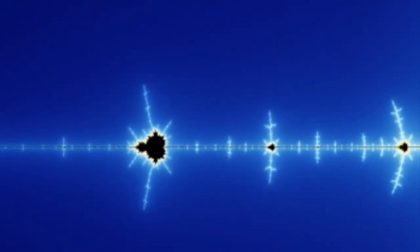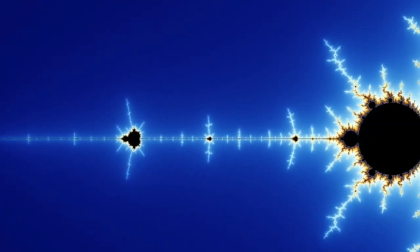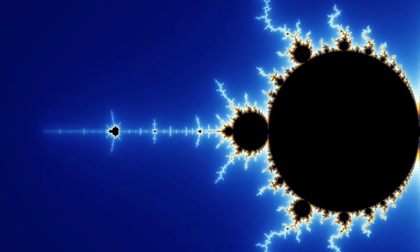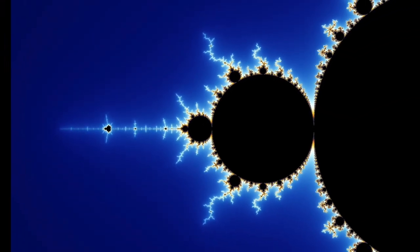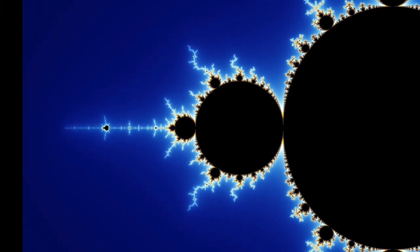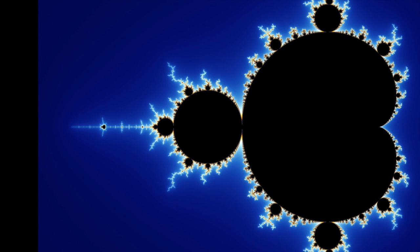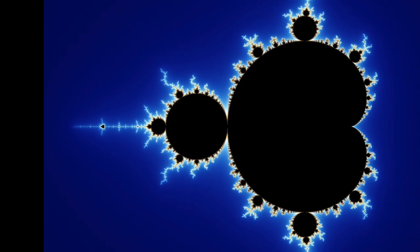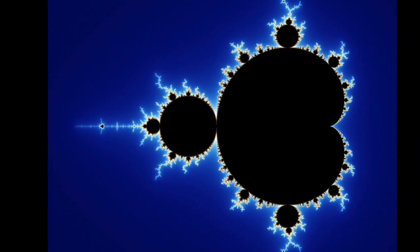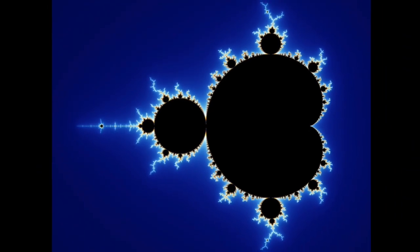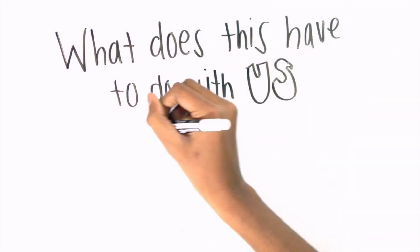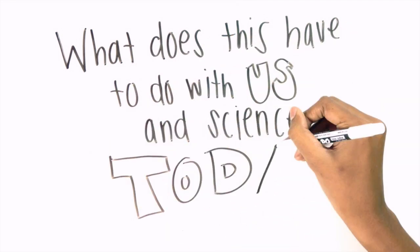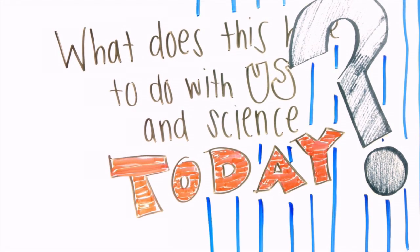When Mandelbrot studied and learned how this worked, he wanted to make an image that combined all the Julia sets. So he made the Mandelbrot set in 1980, and the combined image became the emblem of fractal geometry.